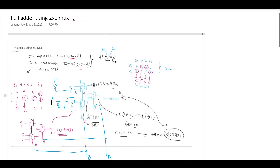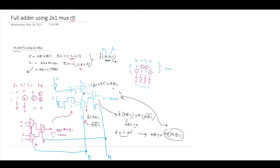The upper part will give you the sum logic, which is A XOR B XOR C, and the lower part gives the carry expression which is AB + AC + BC. We will now proceed to write the RTL for this.